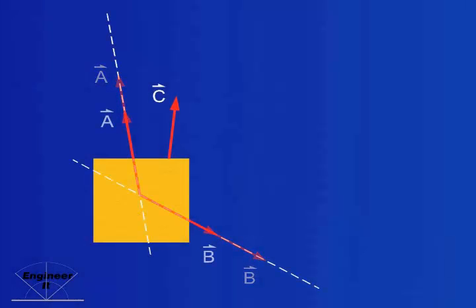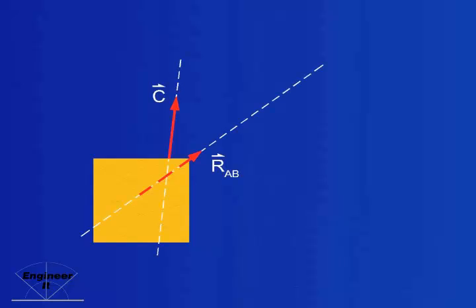Recall combining vectors A and B, then combining their resultant with vector C.